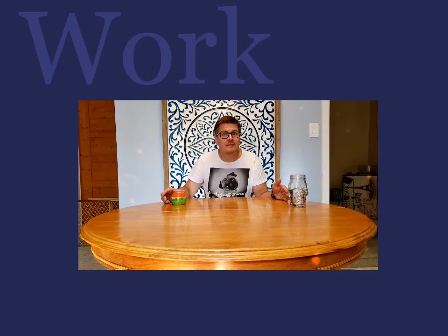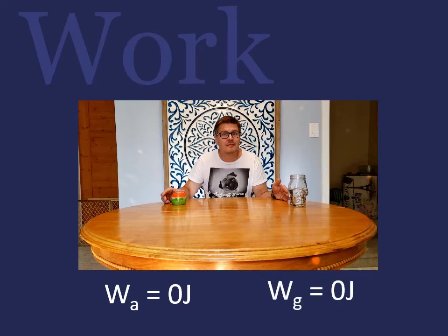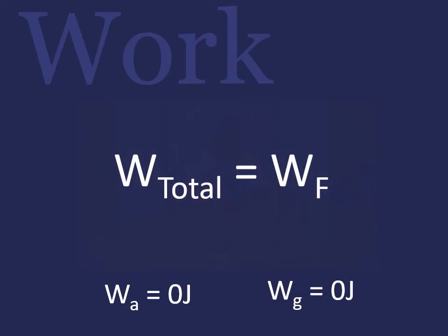No work went into acceleration as the initial and final velocities are the same. And no work went into gravity as the object remains at the same height. But work went into friction. But the displacement is equal to zero — how is this possible?